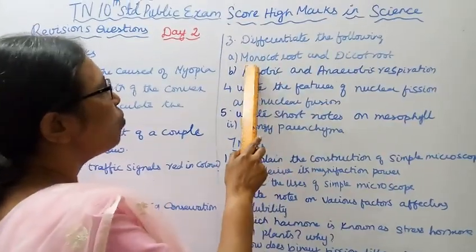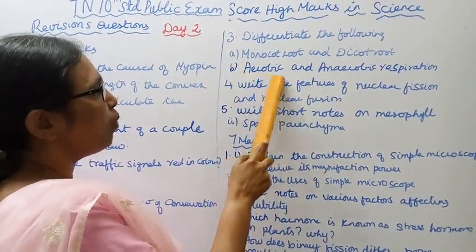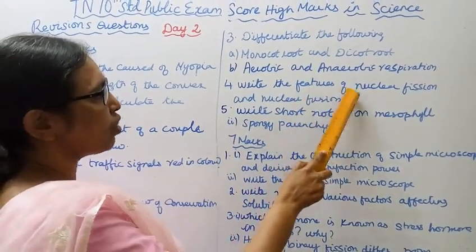Third: Differentiate the following: (a) monocot root and dicot root, (b) aerobic and anaerobic respiration.